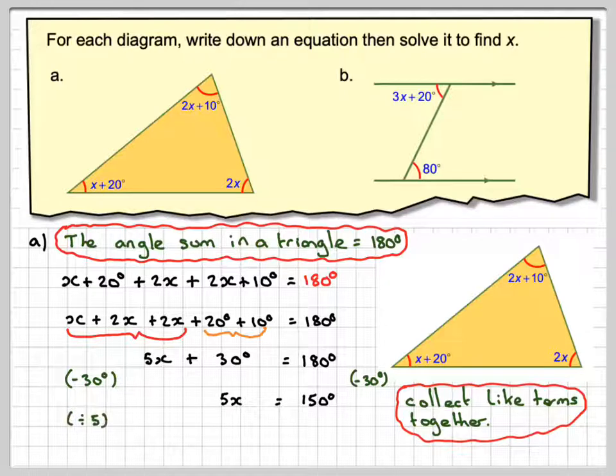Now we have to divide both sides by 5. That will give x on this side, and then 150 divided by 5 gives me 30 degrees. Using that information, I could go back and find all the angles if I wanted to.